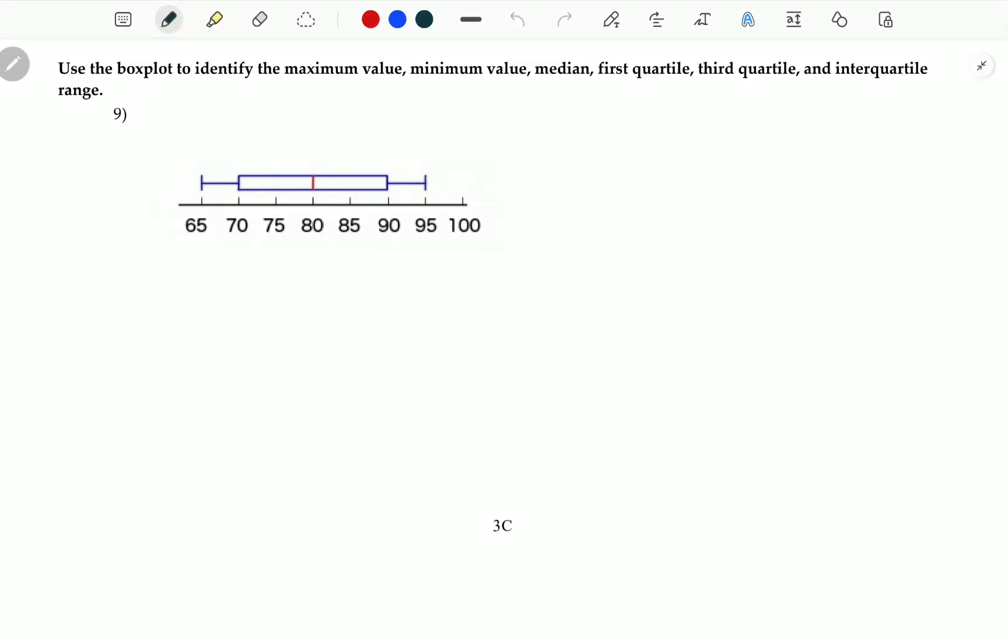Question number nine. Use the boxplot to identify the maximum value, the minimum value, the median, the first quartile, the third quartile, and then the interquartile range.